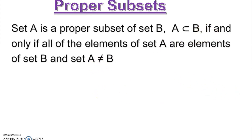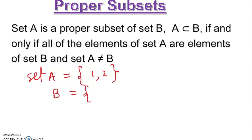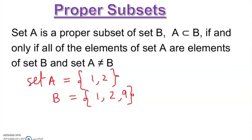Very simple example I can work out here. So if I have set A = {1, 2} and set B = {1, 2, 9}. Clearly I can see all the elements — the matching is going on there. Whatever element I have in A is basically in B, plus one extra.